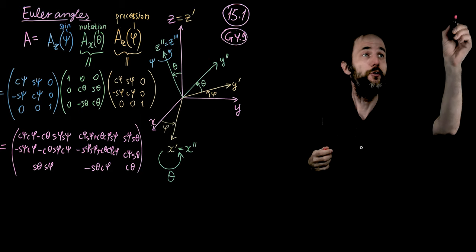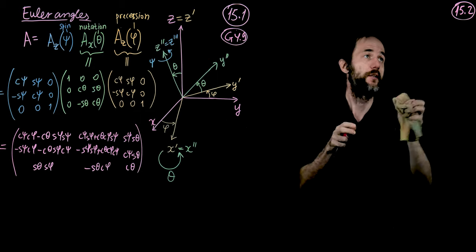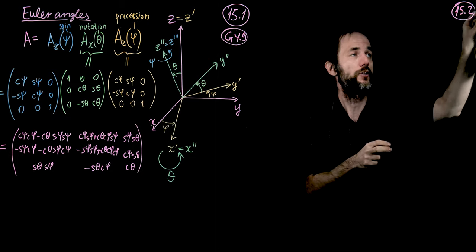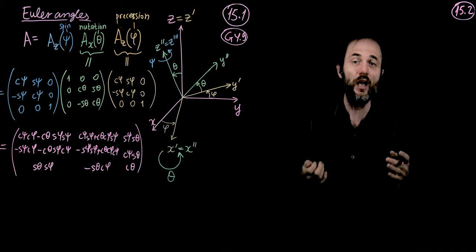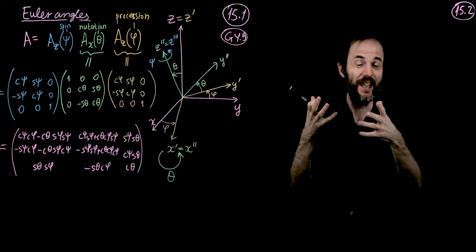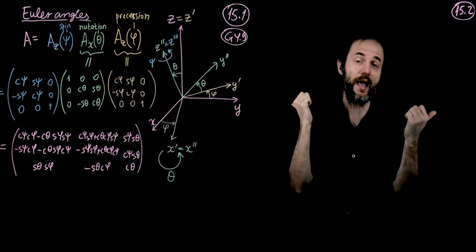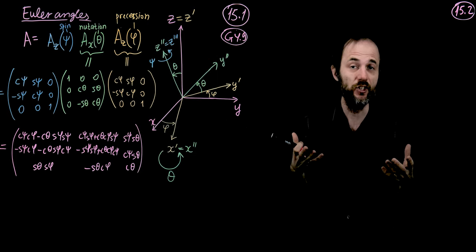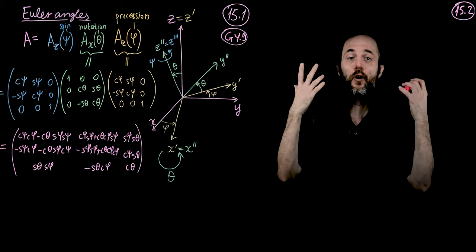Hello and welcome to Part 2 of Lecture 15, section 15.2. Here we take one step closer to computing the equations of motion of a rigid body. We want to write down the equations of motion in the coordinate system that rotates with the body itself. For example, to understand how Earth rotates, we define x, y, z axes stuck with the Earth — these are the primed axes.